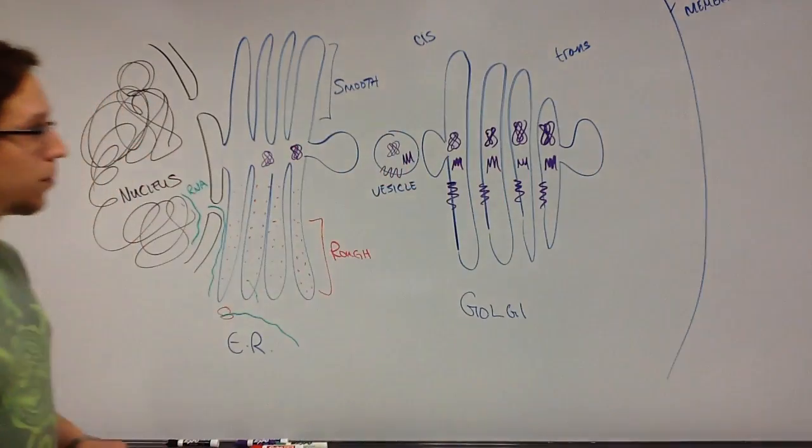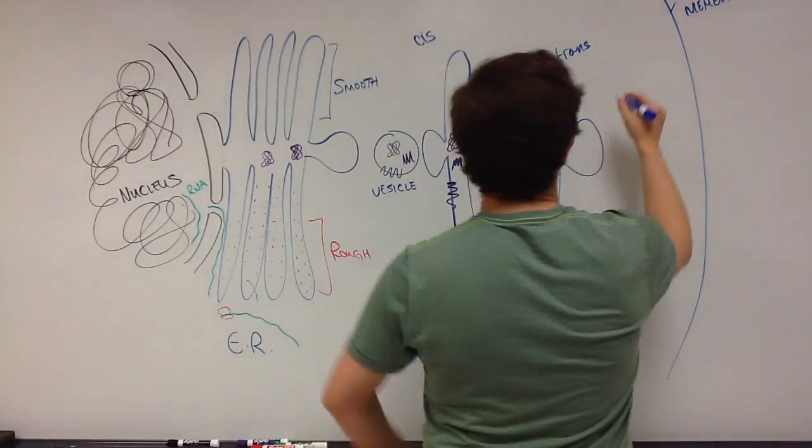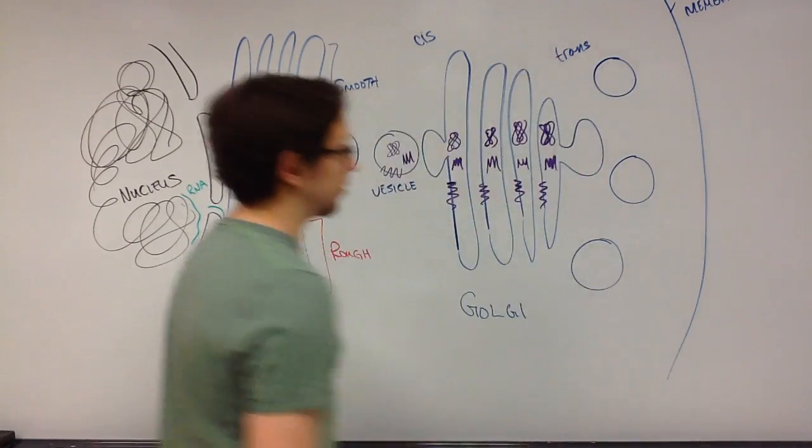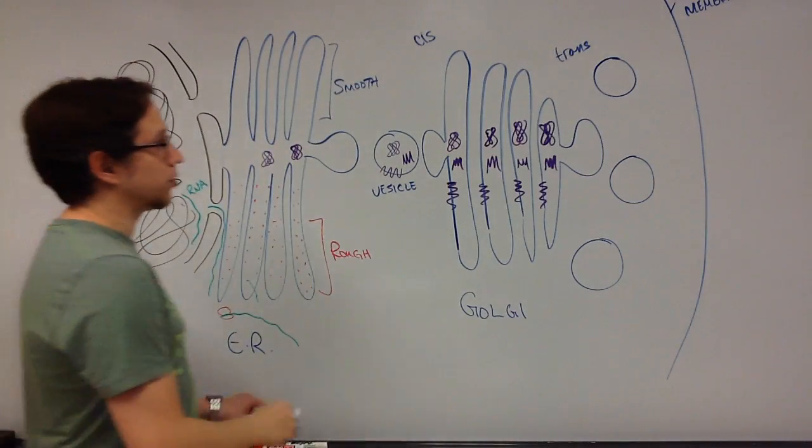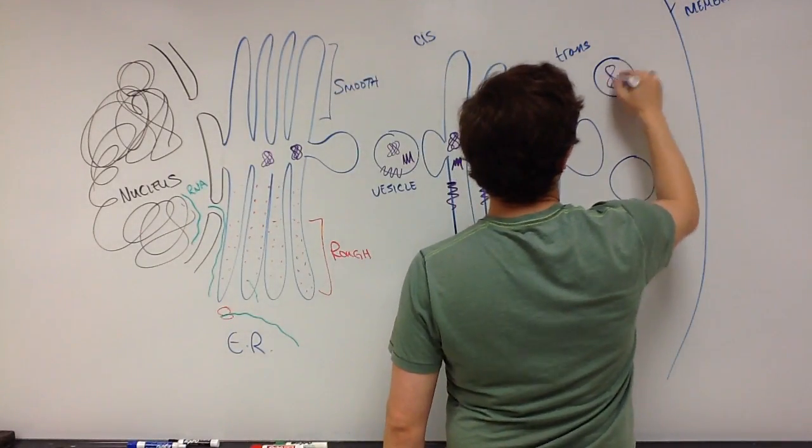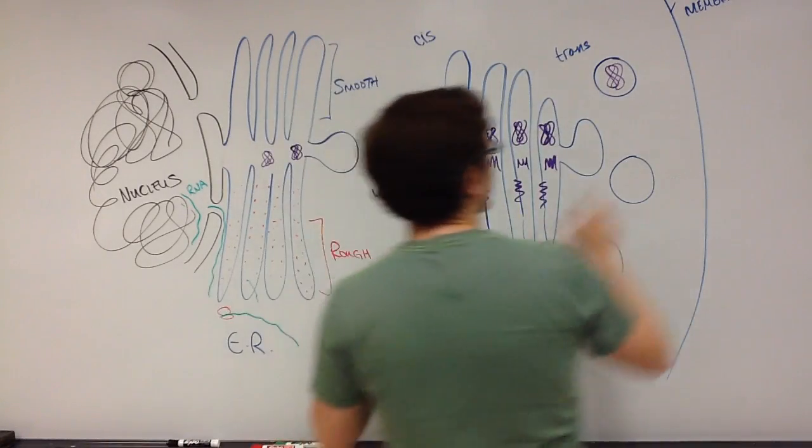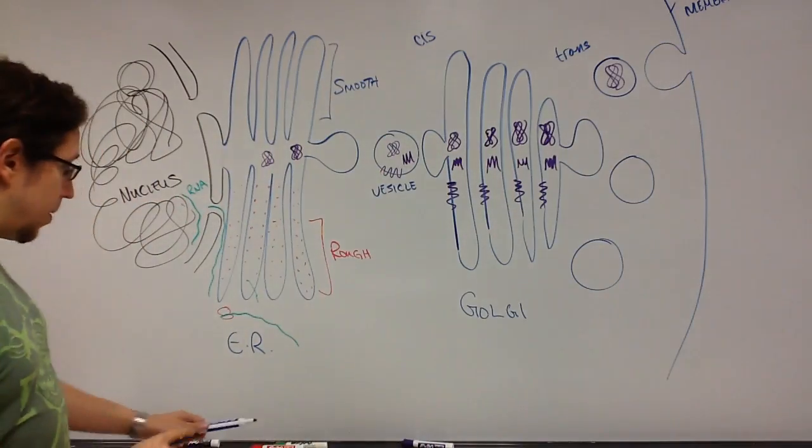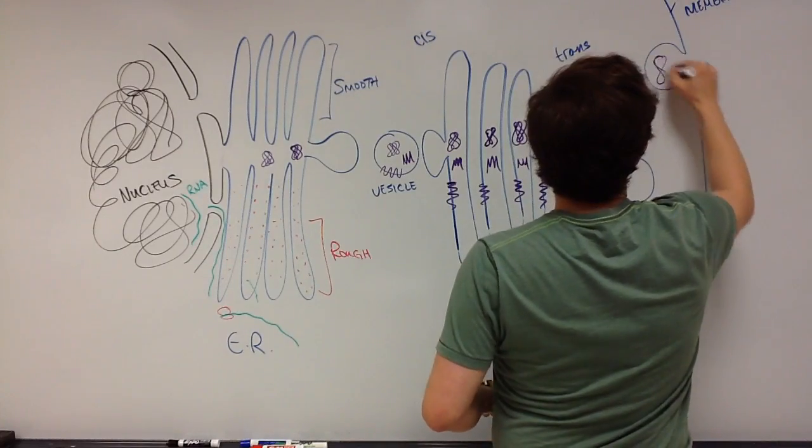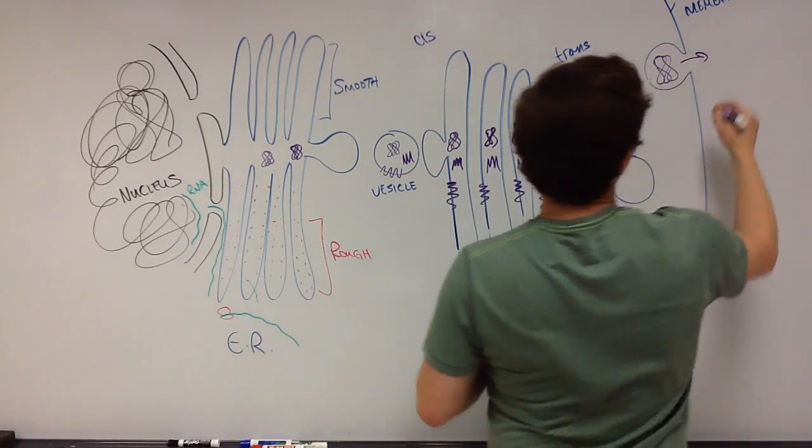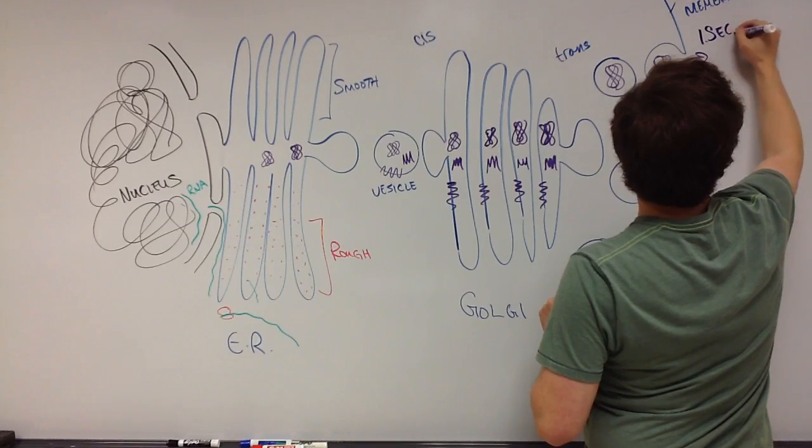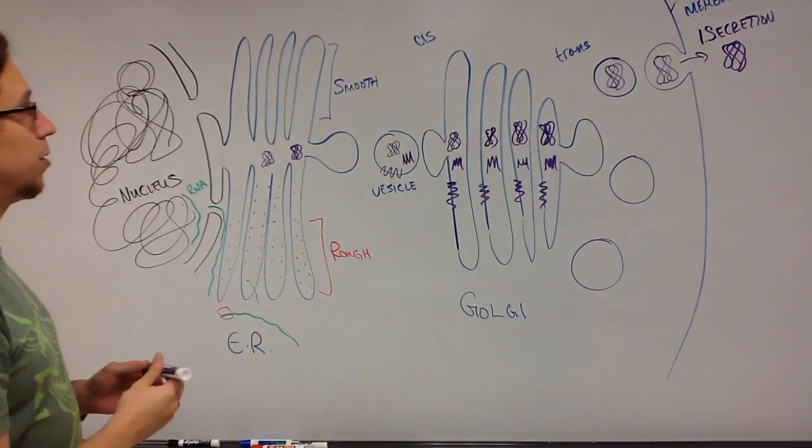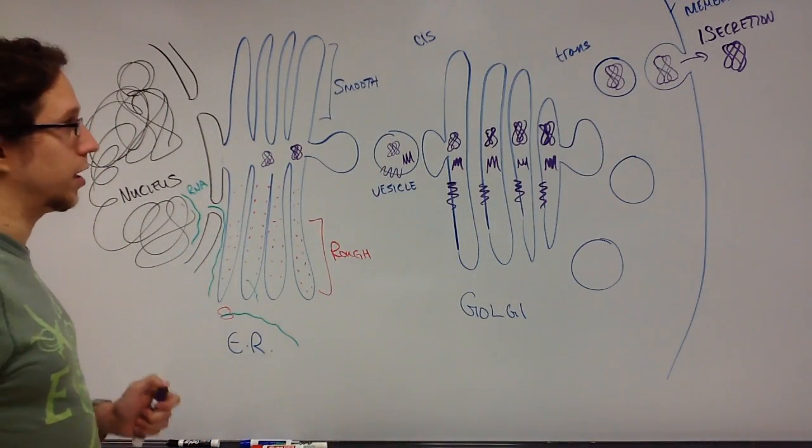Let's assume that these three proteins have different fates. We're going to have three distinct fates that could await these potential proteins. In this particular instance, this membrane of the vesicle fuses with the plasma membrane and this polypeptide is released and we call that secretion. So the first potential fate of a protein that moves through the endomembrane system is secretion to the outside of the cell.